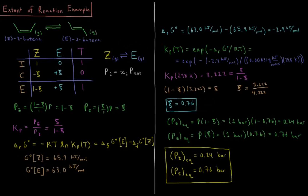This video will be an example of computing the extent of reaction for a chemical reaction. The reaction we're going to look at is the isomerization of 2-butene. We have Z-2-butene, what you might call cis-2-butene, and it is in equilibrium with E-2-butene, or trans-2-butene. We can write this reaction as Z in equilibrium with E.